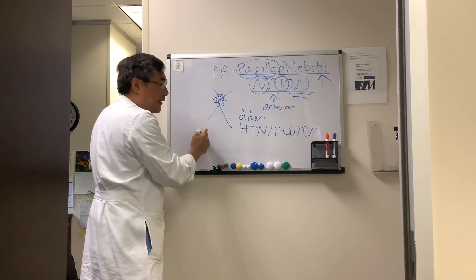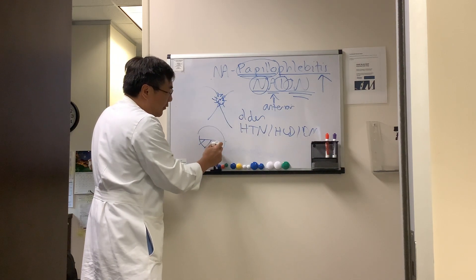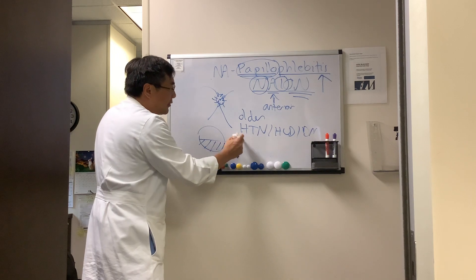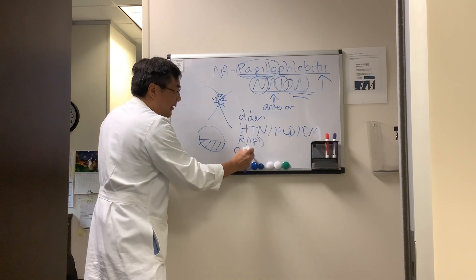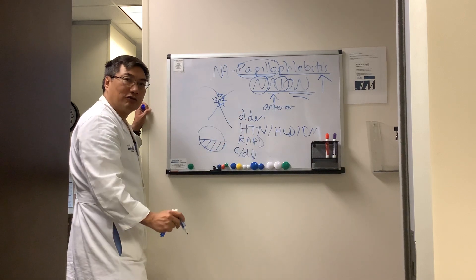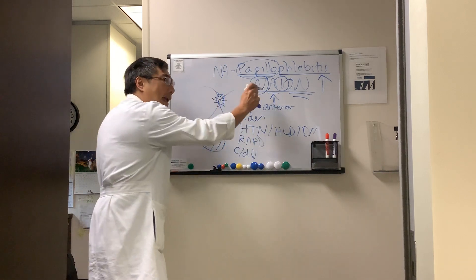This leads to a field defect, often an arcuate or altitudinal field defect, and there's going to be an ipsilateral RAPD. In the contralateral eye, the cup-to-disc ratio will be small, the structural disc at risk for NAION.